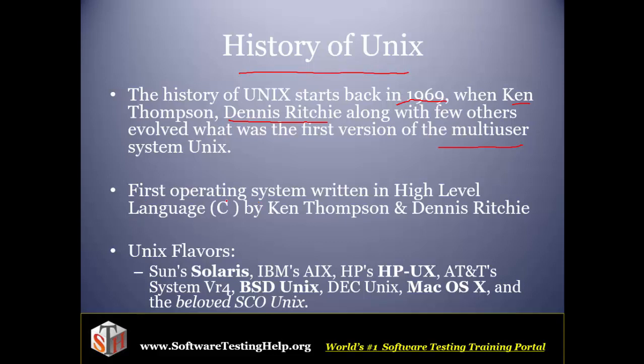Another feature which made Unix very popular was that it was the first operating system written in C language. The advantage of writing in C language was that it was very easy to port it to any other architecture, because only slight changes had to be made. So that made it one of the most popular operating systems.